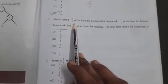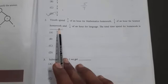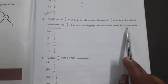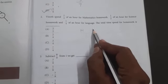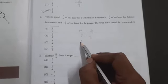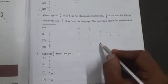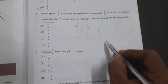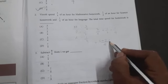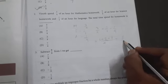Second question: Vinoth spent three by four of an hour for Mathematics homework, one by two of an hour for Science homework, and one by four of an hour for Language. The total time spent for homework is: So for Math we have three by four, for Science one by two, for Language one by four. We add: three by four plus one by two plus one by four. LCM is four, so three by four stays the same, one by two becomes two by four, one by four stays. So five plus two by four, which cancels to three by two. Option A is the correct answer.